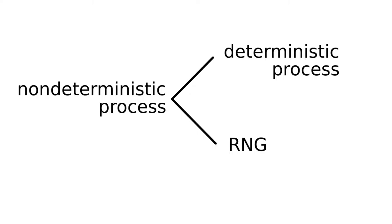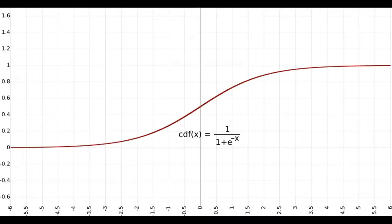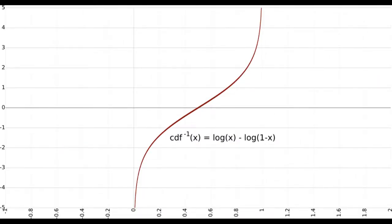Consider the non-deterministic process of drawing a random number from the logistic distribution. To do this, we first integrate the probability density function of the logistic distribution to obtain its cumulative density function. Next, we invert the cumulative density function, which in this case happens to be the logit function.